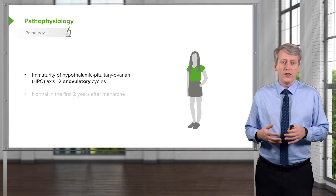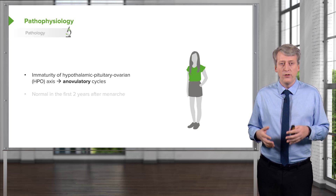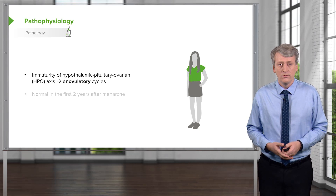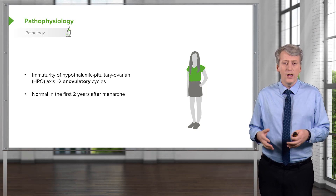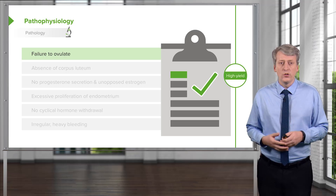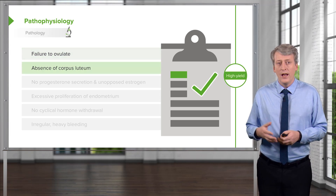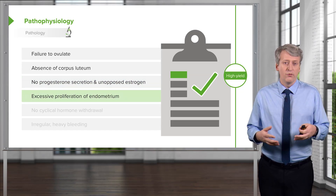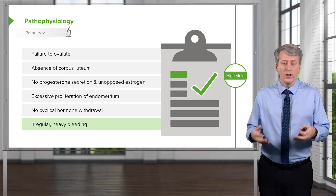Let's discuss briefly the pathophysiology of dysfunctional uterine bleeding. Girls may have an immaturity of their hypothalamic-pituitary-ovarian axis, which can result in anovulatory cycles. This is normal in the first two years after menarche, as girls tend to have very irregular periods after their first period. However, when we see dysfunctional uterine bleeding, this can be a result of failure to ovulate, an absence of the corpus luteum, no progesterone secretion or unopposed estrogen, excessive proliferation of the endometrium, no cyclical hormone withdrawal, and then results in irregular, heavy bleeding.